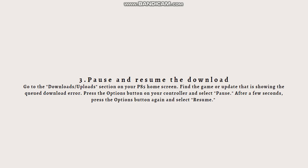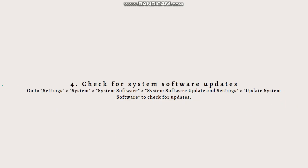Remember you can always pause this video and go through the steps at your own pace. The next step is to check for system software updates. Make sure your PS5 has the latest system software updates installed, as updates can address bugs and improve system performance, which might help resolve download issues. Go to Settings, then System, then System Software, then System Software Update and Settings, and select Update System Software to check for updates.